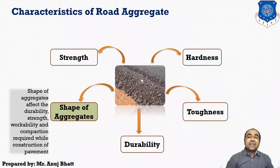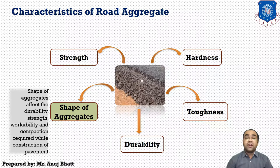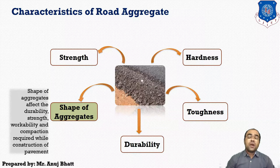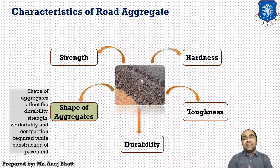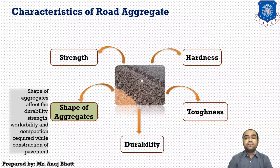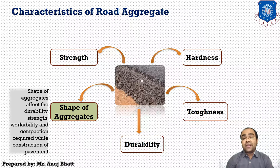Hence, too much flaky and too much elongated aggregates should be avoided as far as possible. Rounded aggregates may be preferred in cement concrete mix due to their low specific surface area and better workability. However, rounded aggregates are not preferred in granular base courses, water-bound macadam construction, or bituminous construction, as the stability due to interlocking of rounded particles is very low. In such constructions, angular particles are mostly preferred. Voids present in a compacted mix of coarse aggregates depend on the shape; highly angular, flaky, and elongated aggregates have more voids compared to rounded aggregates.